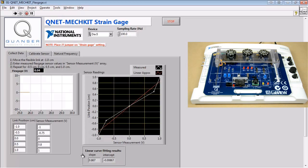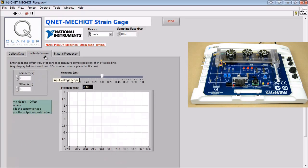With these values, we can compare how much we physically move the flexible link with the calibrated values on the screen. If these values match, we have properly calibrated our strain gauge.